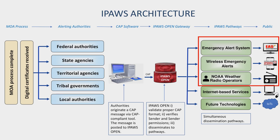This is the architecture. There is a process to become an alerting authority. Each government agency that applies enters into a memorandum of agreement with FEMA, stating they would like to use the system and agreeing to rules of behavior — no ill intent, not spamming servers, etc. Once approved through their state authority, alerting authorities receive a digital certificate from FEMA — this is the key to use the system. Federal, state, tribal, territorial, and local authorities are then responsible to secure some type of software system capable of issuing an IPAWS alert. FEMA does not provide this software; these are commercial off-the-shelf products, about 30 or so on the market.